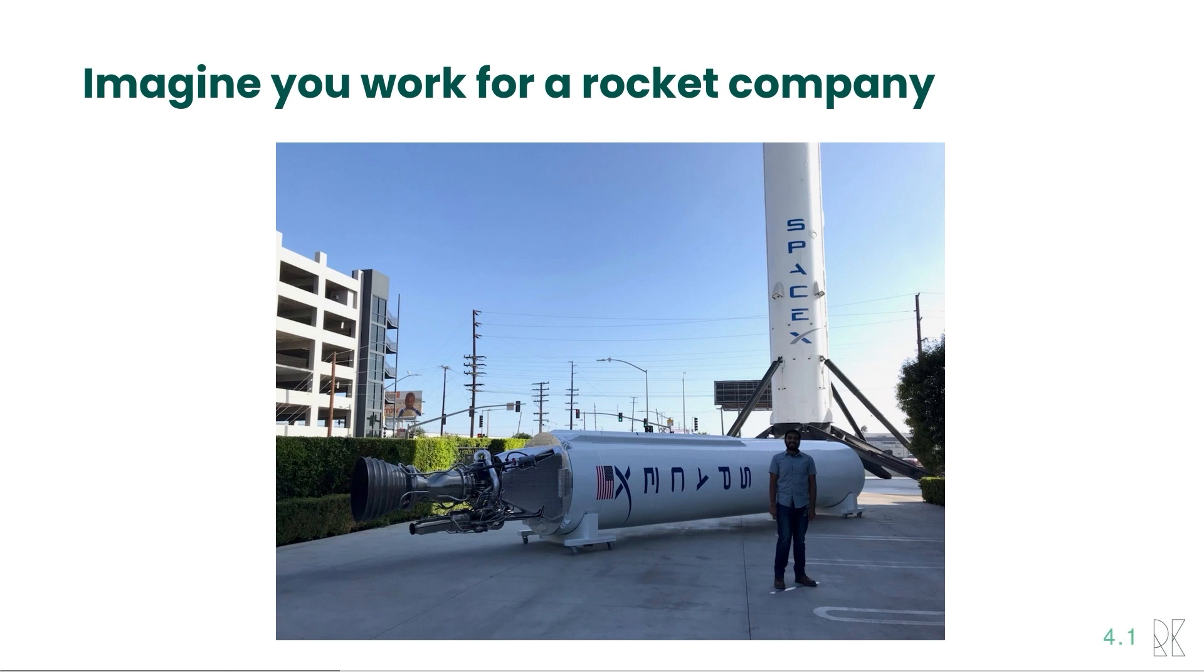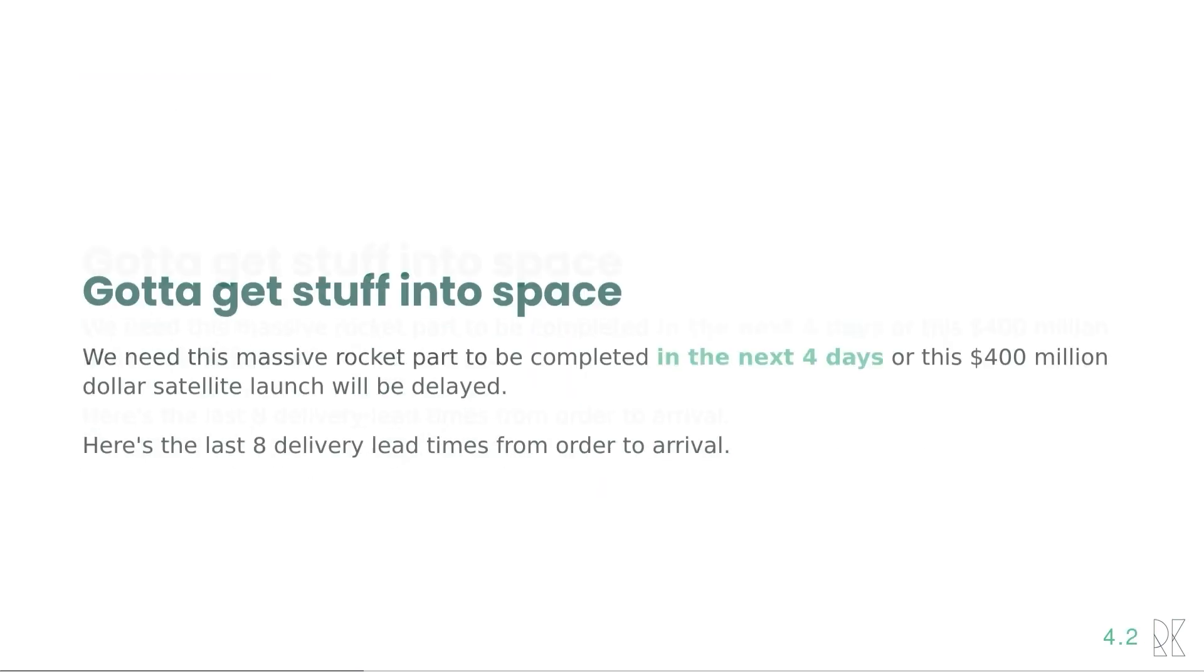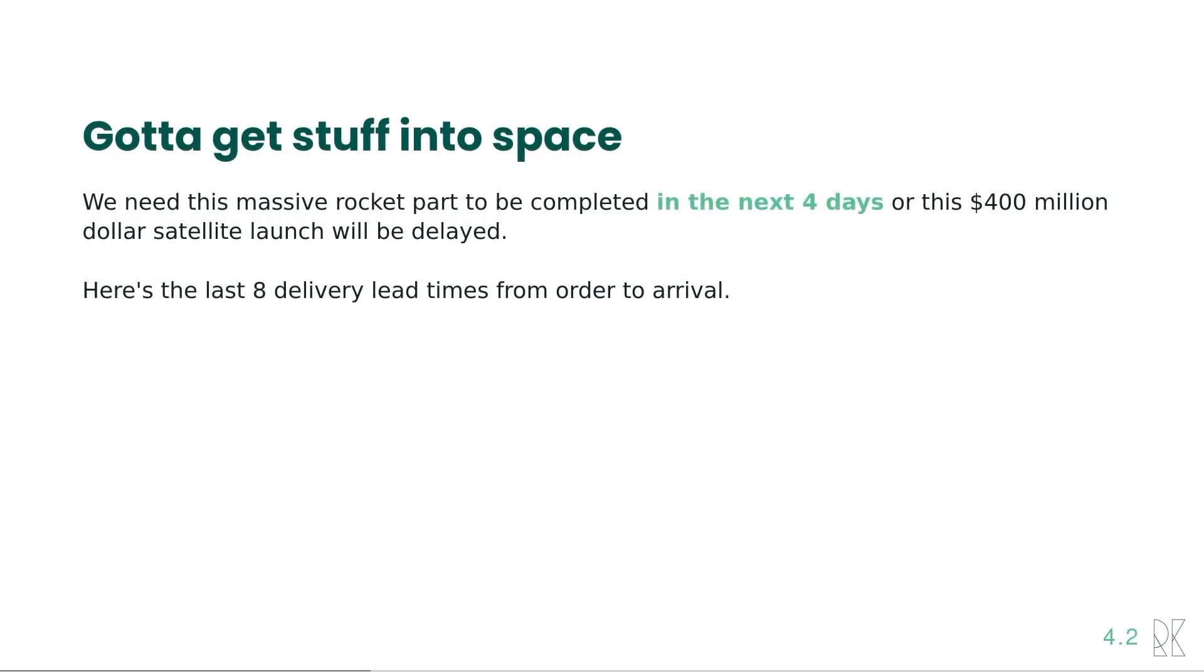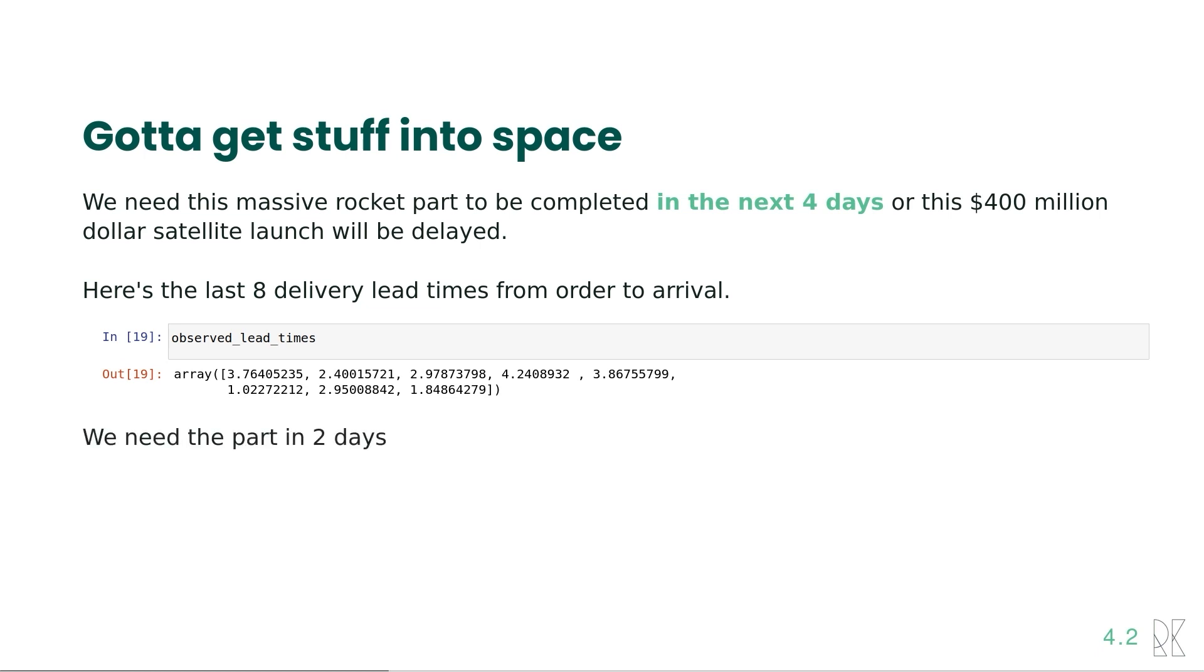So imagine you work for a rocket company, like this one here. Let's say you need to get stuff into space. Now we have a $400 million satellite. It's got to be in space in four days, but we need a part to get that rocket finished so it can get into space. We have the last eight lead times for the delivery of this part, and we have them here. It was three days, or two days, or 1.8 days, but we've got them in our database. We need this part in two days. Are we going to be late?